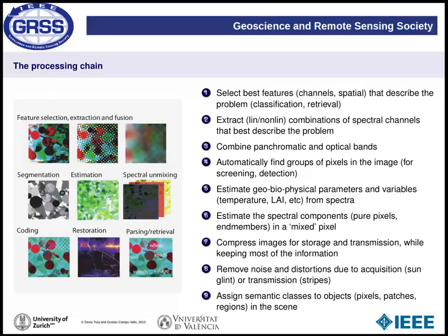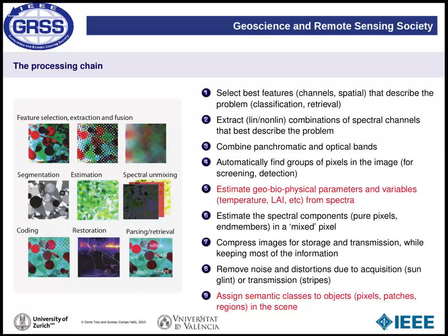These are the nine tasks one would like to perform when working with remote sensing data. In the following, we will concentrate on two of them: classification in the next part, and the estimation of geo-biophysical parameters and variables in the third part.